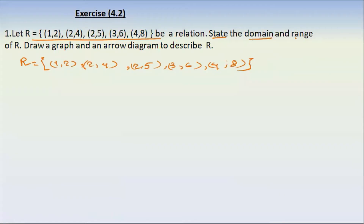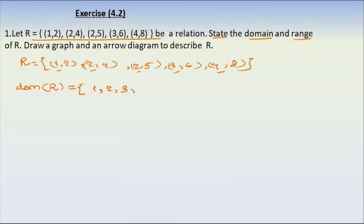If you are asked for the domain of A, the domain of A is the set of first elements of A. That means the domain of A equals the domain elements: 1, 2, 3, 4. The set is {1, 2, 3, 4}. Range of R — range of R is the set {2, 4, 5, 6, 8}.